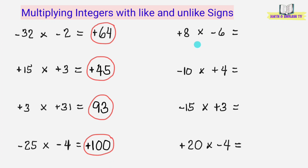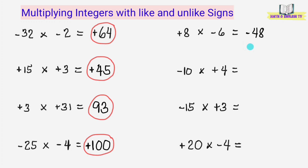Ngayon naman, mag-multiply tayo ng integers na magkaiba yung signs. Ganon pa rin yung gagawin natin — i-multiply natin yung numbers: 8 times 6 equals 48. At dahil magkaiba yung signs ng integers na ating iminultiply, ang ilalagay nating sign sa product ay negative sign. Laging negative yung answer kapag magkaiba yung sign ng ating iminultiply. Kaya yung product ay negative 48.